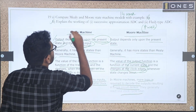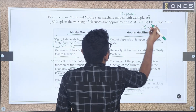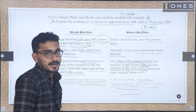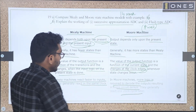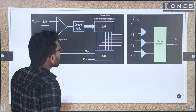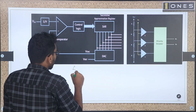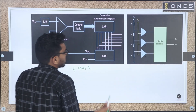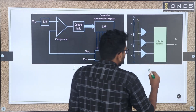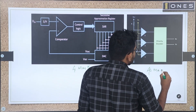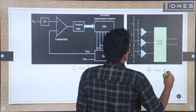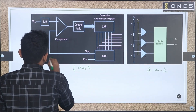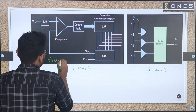For the next question, again it is pure theory: Successive Approximation ADC and Flash Type ADC — split up as 4 marks for Successive Approximation ADC and 4 marks for Flash Type ADC. First, we take Successive Approximation ADC.